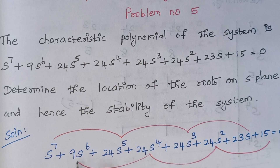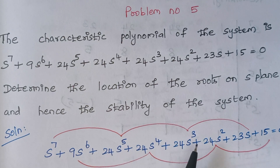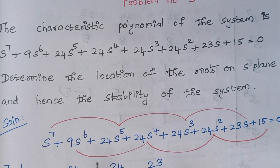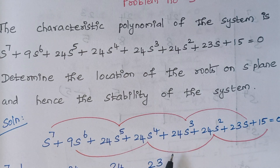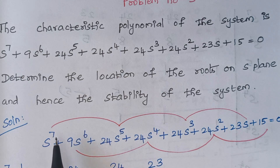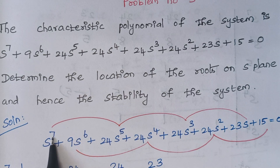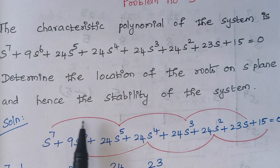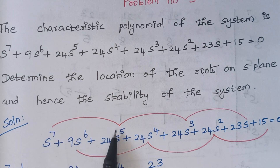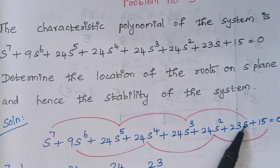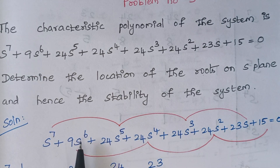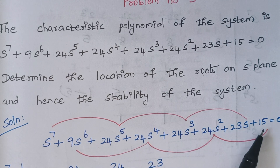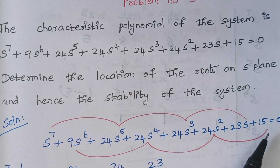This is the given characteristic equation. Here the maximum power is 7, so this characteristic equation has 7 roots totally. Since 7 is an odd number, we have to select the odd coefficients: 7, 5, 3 and 1. And here S to the power 6, then 6, 4, 2 and S to the power 0.